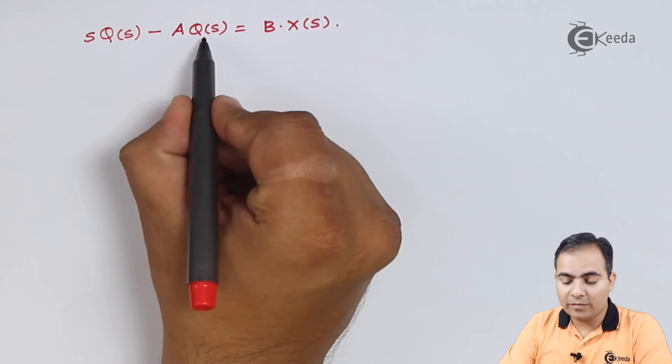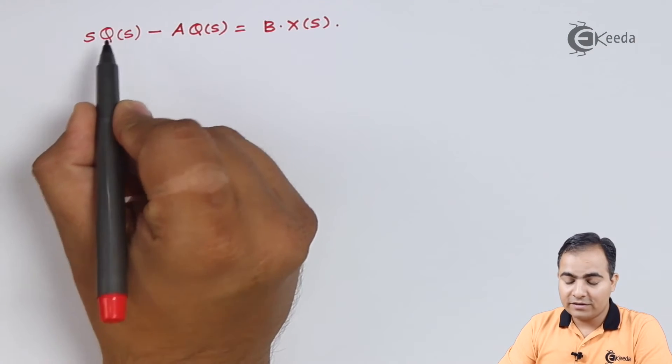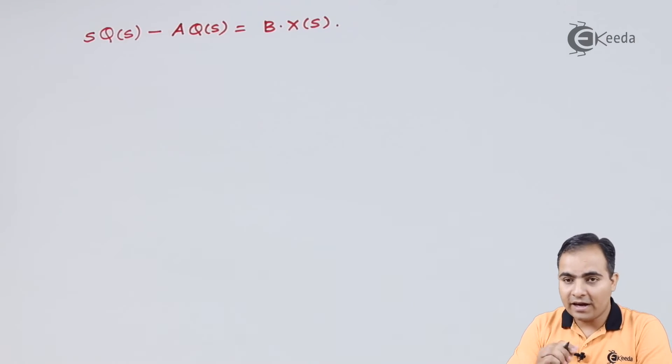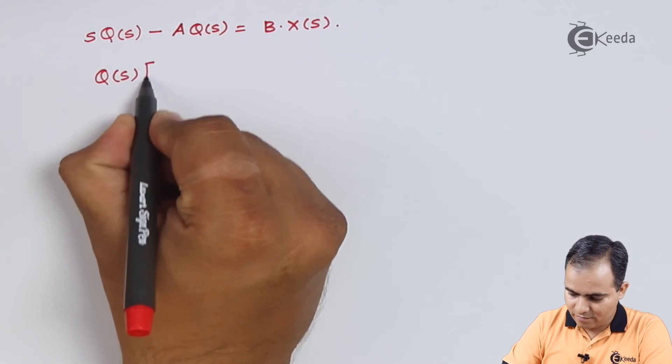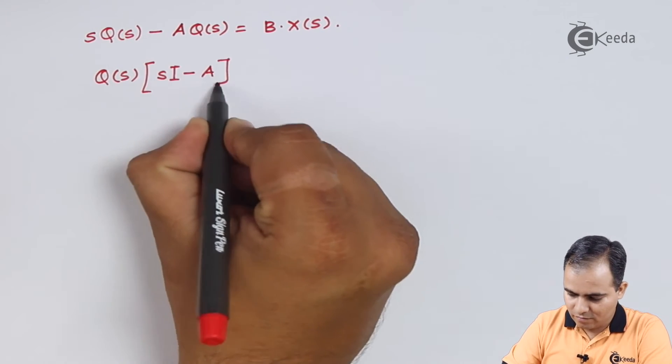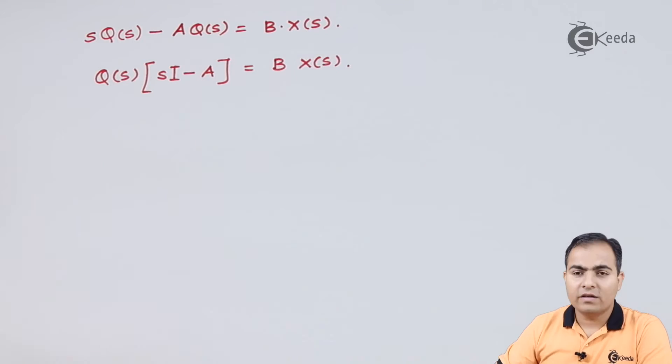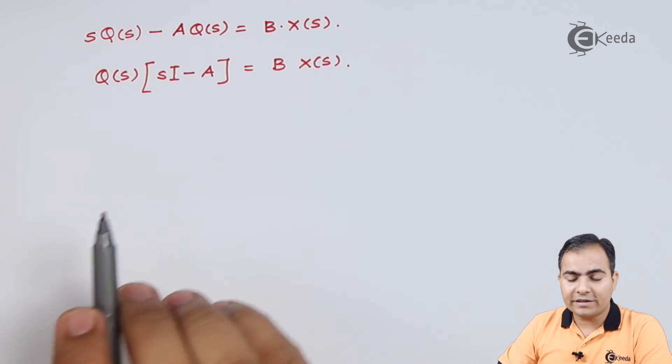So I will take Q of s common and this place is replaced by I and that I is nothing but my identity matrix.